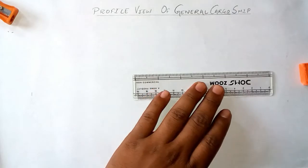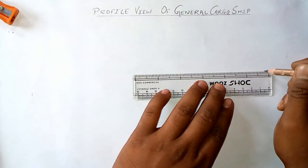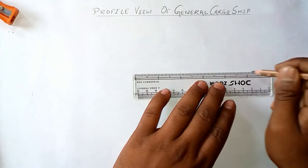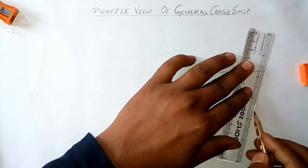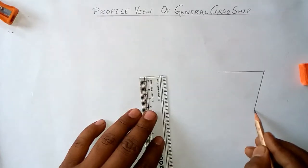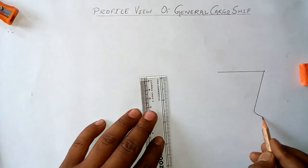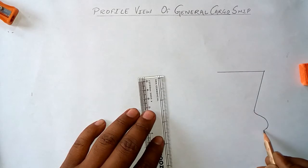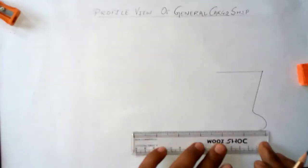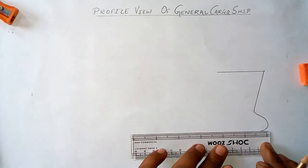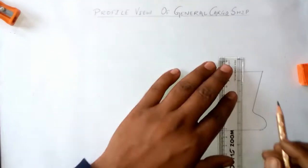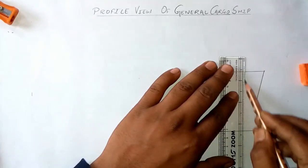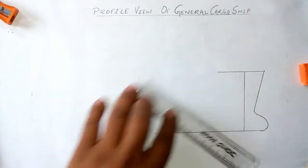Hello friends, welcome to my channel. Today I am going to draw a profile view of a general cargo ship. First of all, I am making the fore end of the ship and the bottom of the ship.